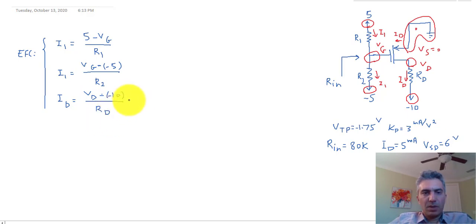Now I do know that this value needs to be 5 milliamp. So I put that right there. Then the equation for the transistor. I'm going to assume that the device is in saturation, and that's actually given that the question says Vsd is equal to 6 volts, or in other words Vds is equal to minus 6 volts, and we can assume that the device is in saturation.